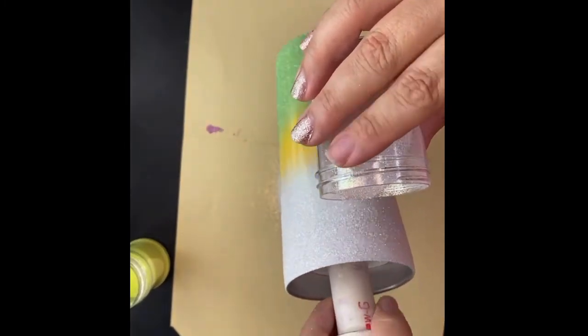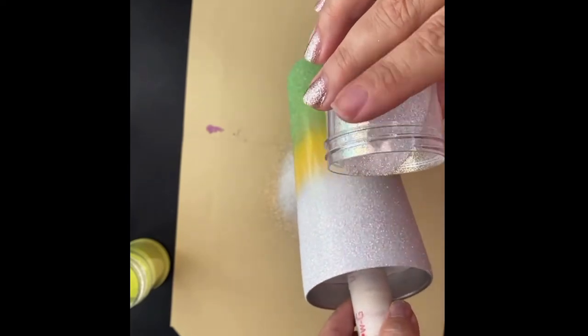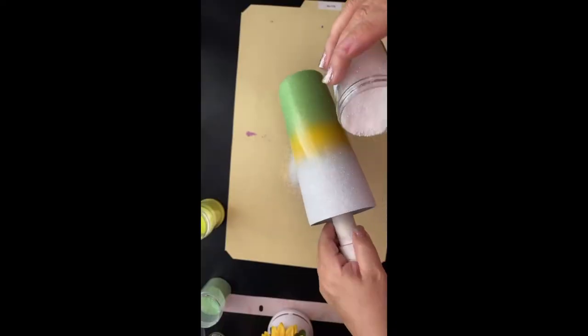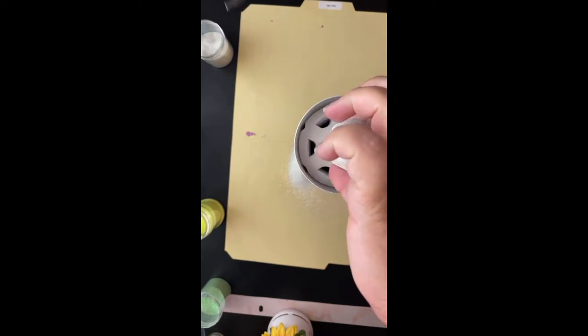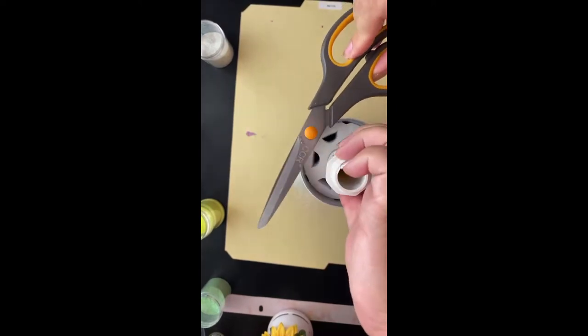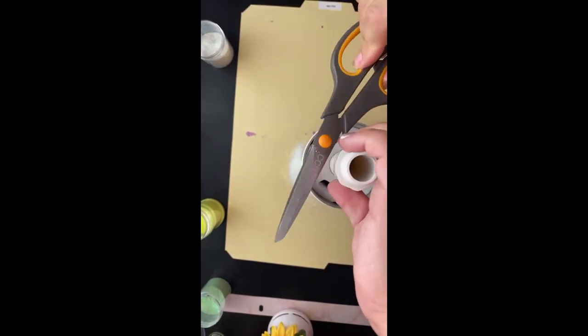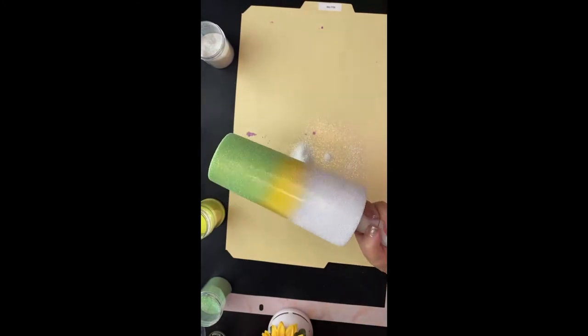Once you've gone all the way around the cup, I do like to hold it upright when I tap with the scissors and allow that extra loose glitter to fall down. And again, that helps with that ombre and that blending effect.